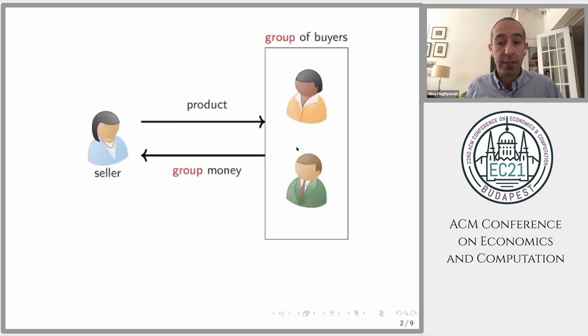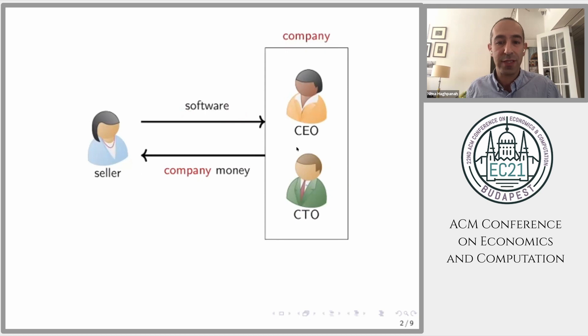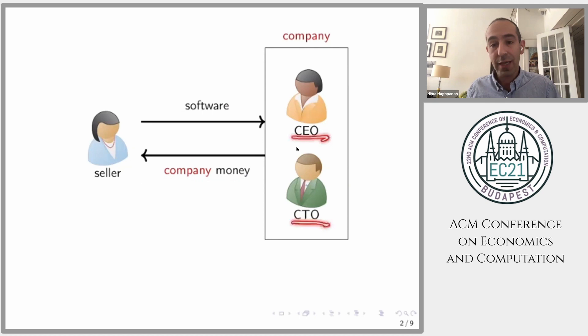Consider a seller that sells a single product to a group of buyers who pay for this product using some money that they collectively own as a group. For example, imagine that the seller is selling software to a company — something like a cloud service or a cybersecurity software — and the company pays for it using company money. The software is not sold to any given individual but to the group, and the money is not coming from each individual's pocket but from a collective pool of money that the company owns.